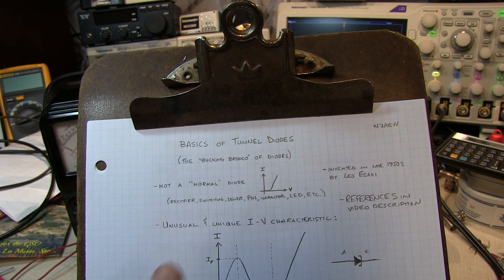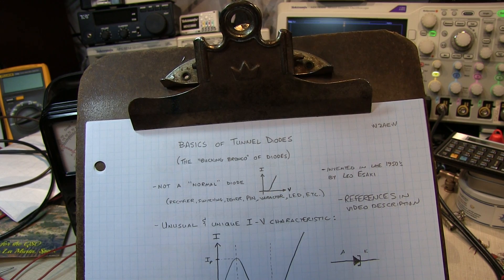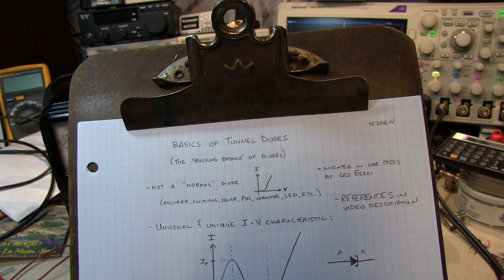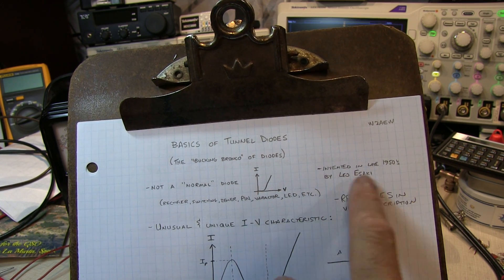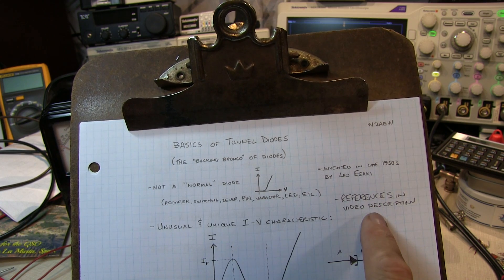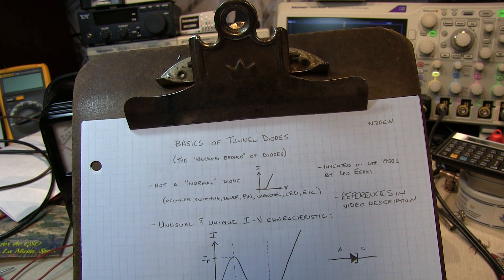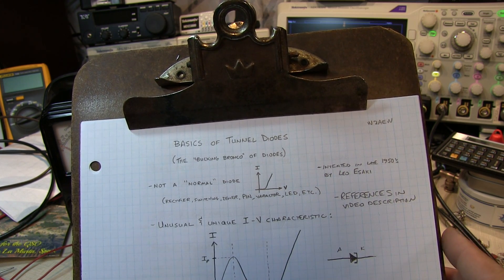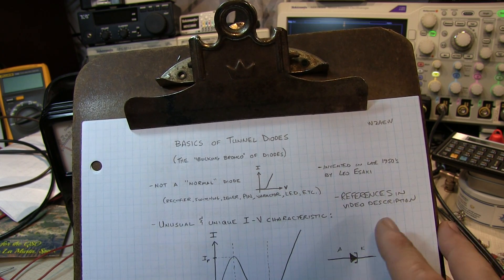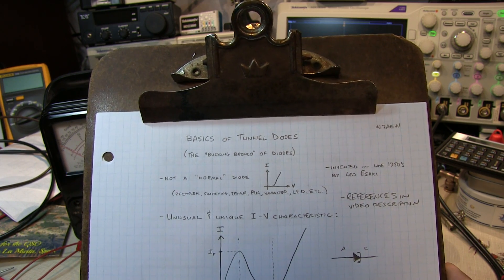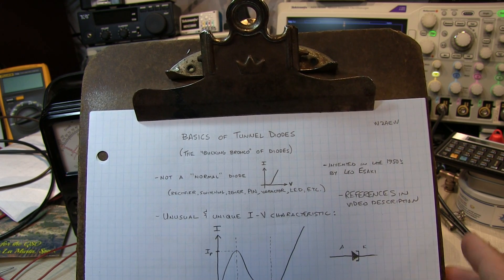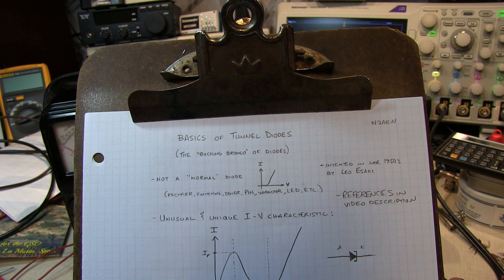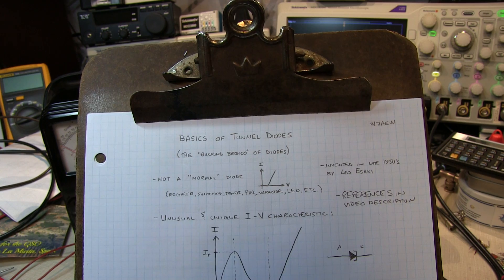Now the tunnel diodes do not follow that same basic principle. The tunnel diodes were invented in the late 1950s by Leo Asaki, and there's some really good references that I'll link in the video notes down below. There's actually a lot of information online about tunnel diodes. Some of the original data books and text and tutorials on tunnel diodes from the late 1950s and early 1960s are all scanned and available online, literally hundreds of pages where you can go research the theory and details to your heart's content.